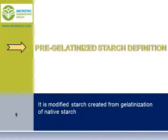Now I would like to tell you the exact definition of pre-gelatinized starch. Pre-gelatinized starch is a kind of modified starch created from gelatinization of native starch. Gelatinization is a process that breaks down the intermolecular bonds of starch molecules. This is a physical method to modify the properties of native starch. By this modification, starch would be soluble in cold water and can create viscosity in cold water.